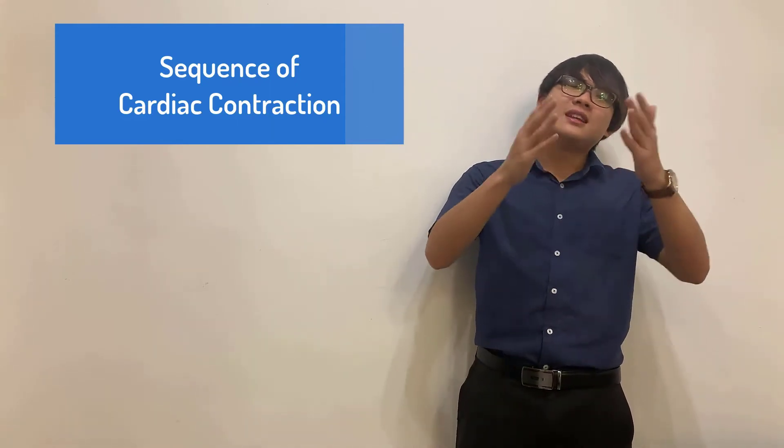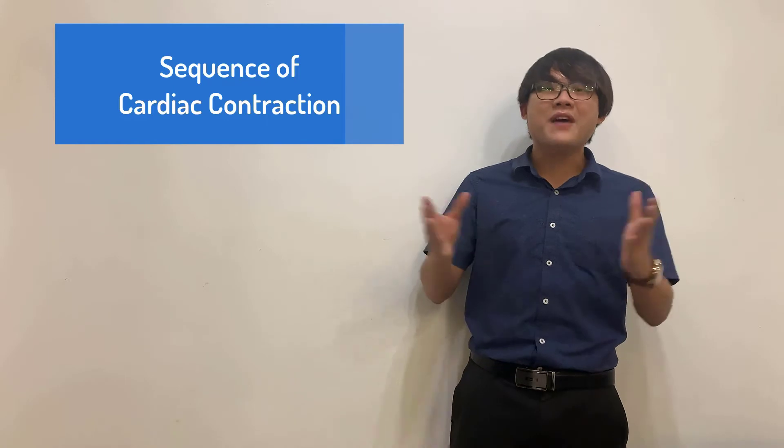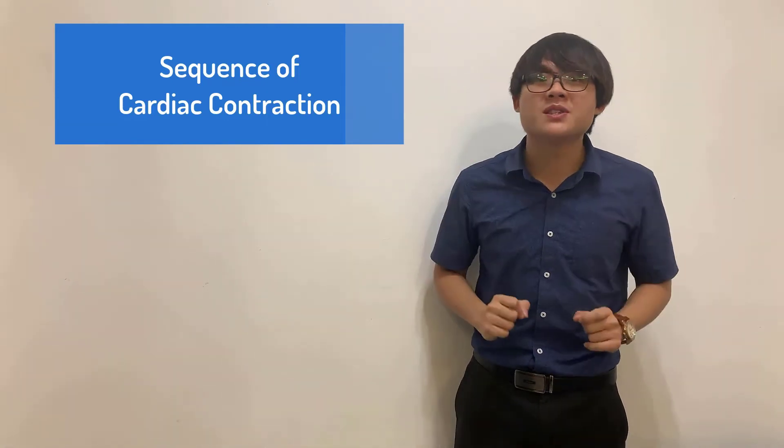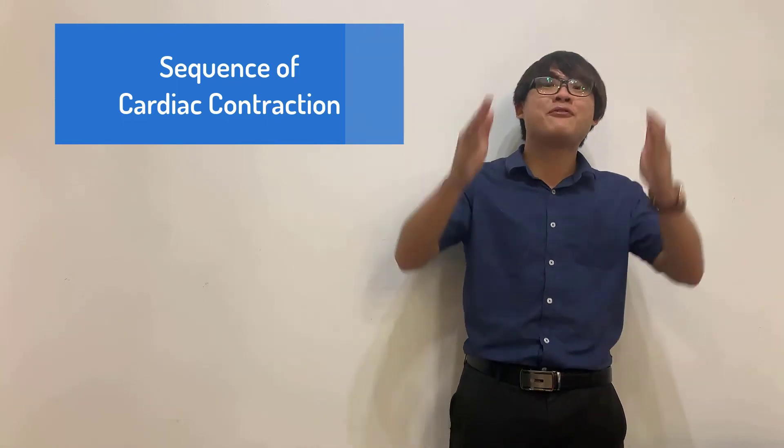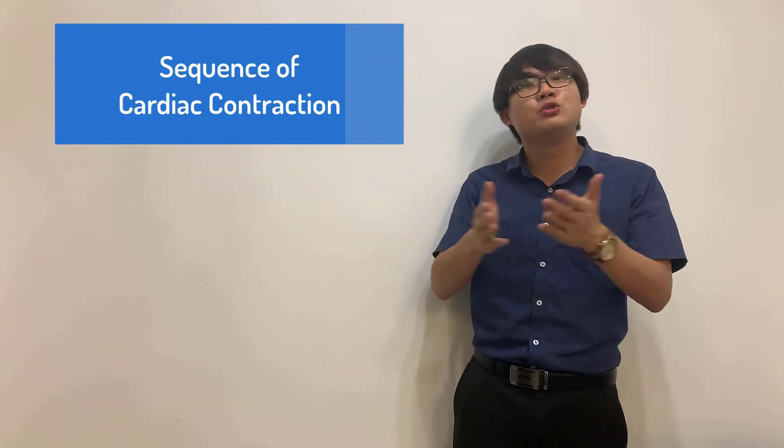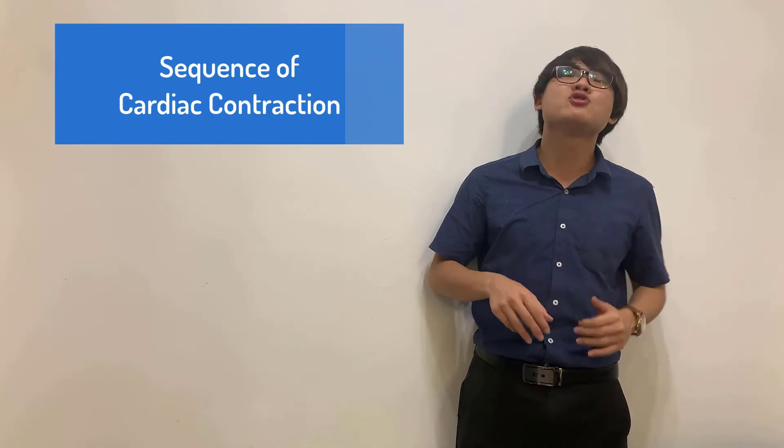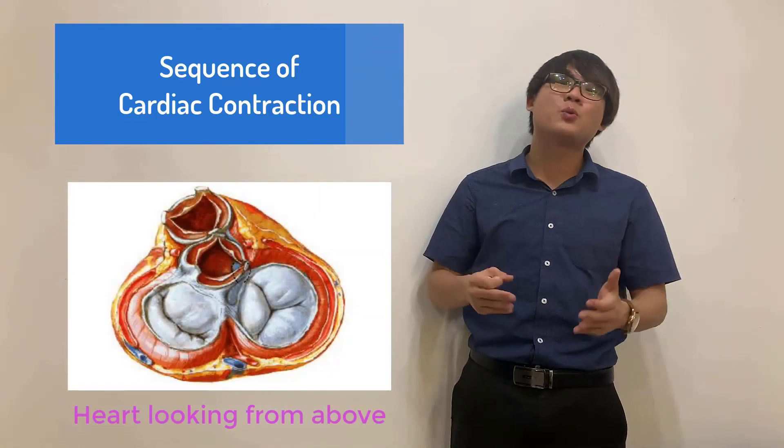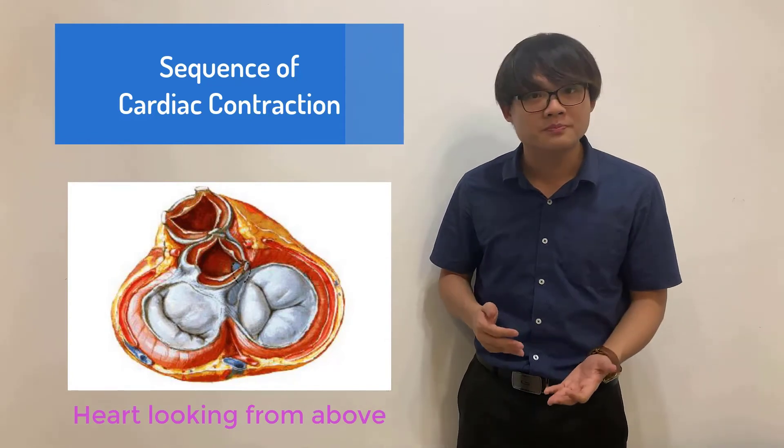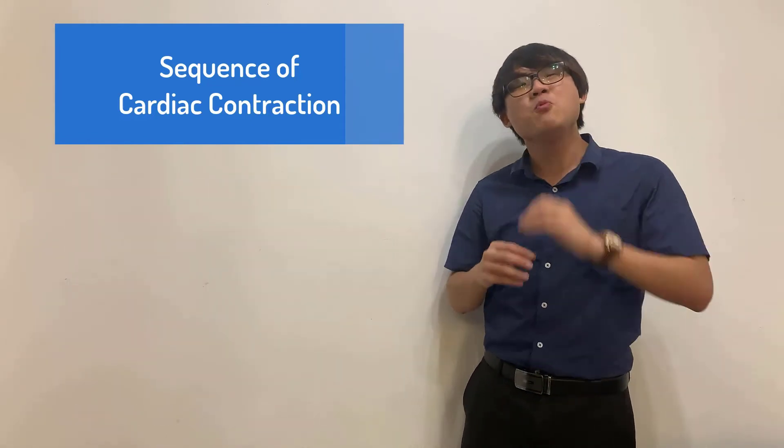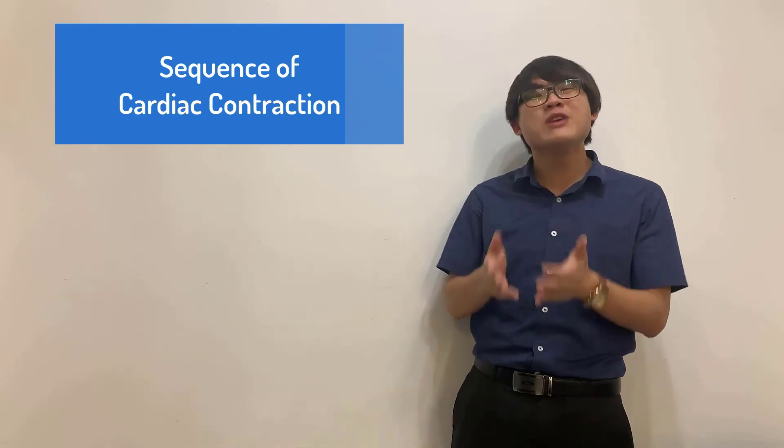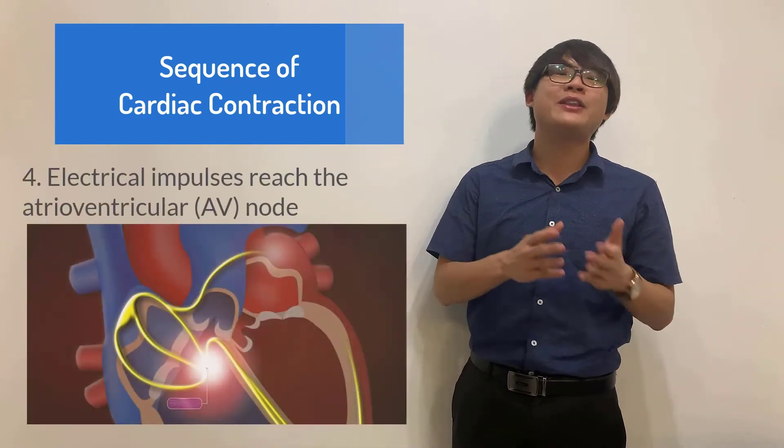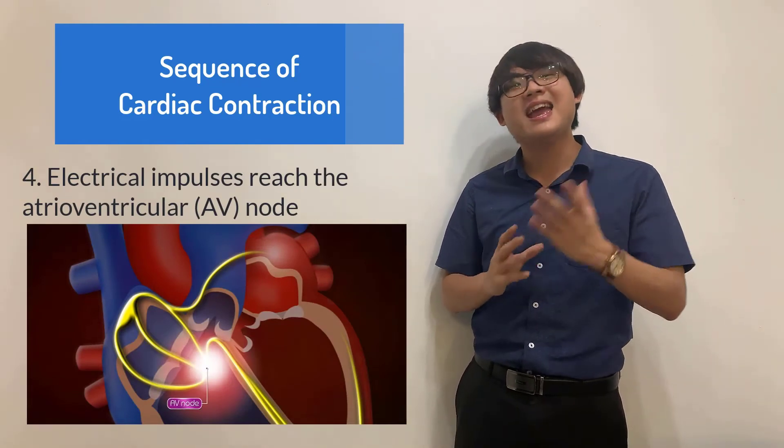The next step is we want to stimulate the ventricles to contract. However, the electrical impulses cannot spread from the wall of the atria to the ventricles directly because there is actually an electrical insulator located between the atria and the ventricle. So the only way that the electrical impulse can reach the wall of the ventricles is through the atrial ventricular node or the AV node.